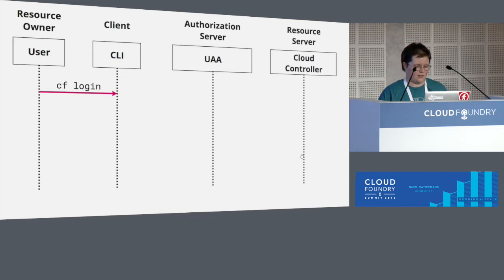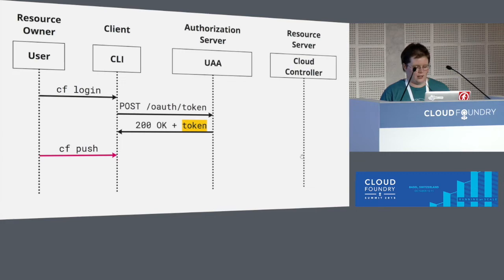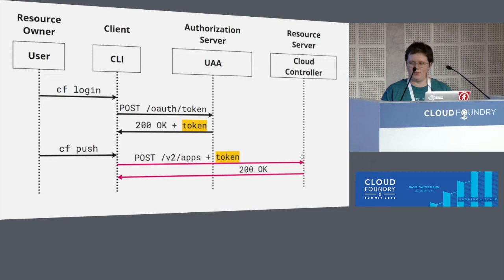In our world these roles map like this: Cloud Controller is the resource server and the client is the CLI. So if you're in a scenario where the user wants to do a cf login, you type that into your computer, you provide your username and password to the CLI. The CLI will turn around and make a request to UAA to request a token, passing the client ID and client secret as well as the username and password. Assuming that all checks out, the UAA replies back with a token, which the CLI saves off in a text file. Then when the user types cf push, the CLI can post your app over to Cloud Controller with that token, and if all goes well you get a 200 back.